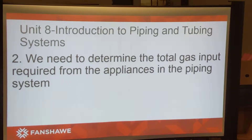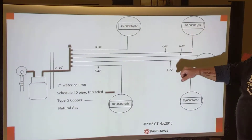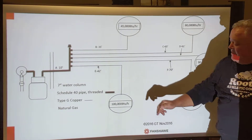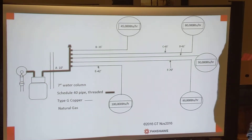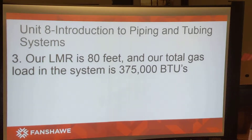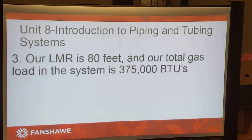Step number two: we need to determine the total gas input required from the appliances in the system. We're going to add up all of the BTUs — 45,000, 80,000, 90,000, 60,000, and 100,000 BTUs per hour. Our LMR is 80 feet and our total gas load in the system is going to be 375,000 BTUs per hour.